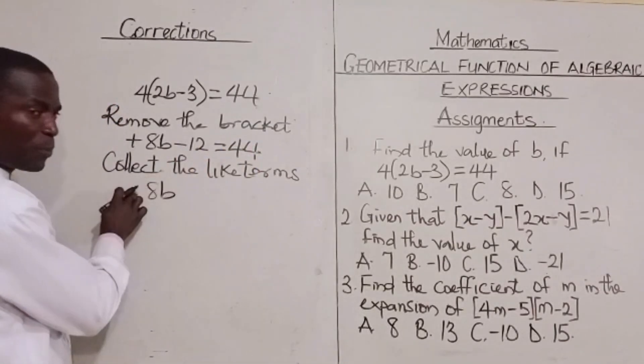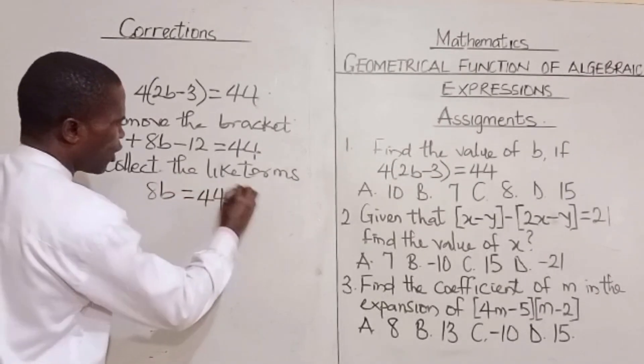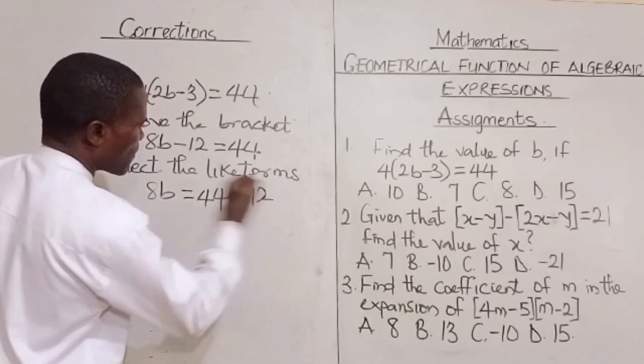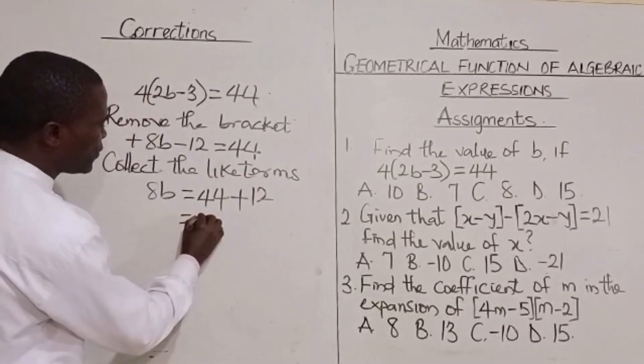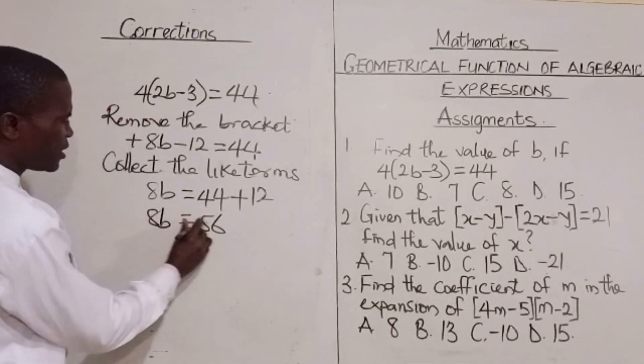Now we have 8b is equal to 44 plus 12. Now we are going to have 56. So we have 8b is equal to 56.